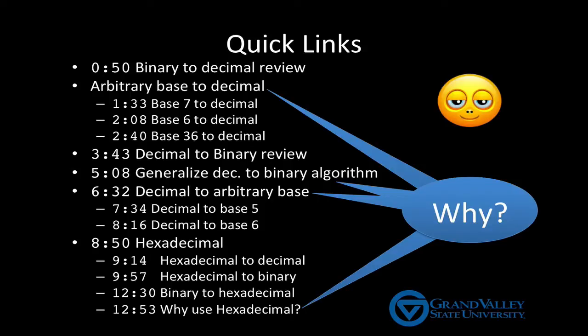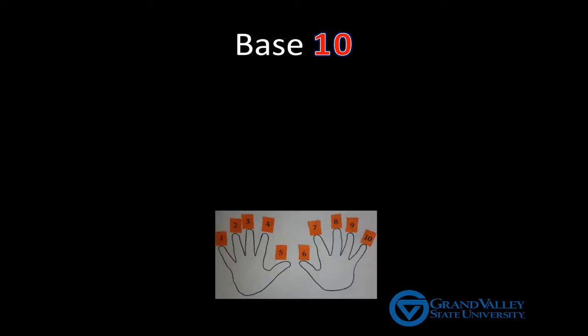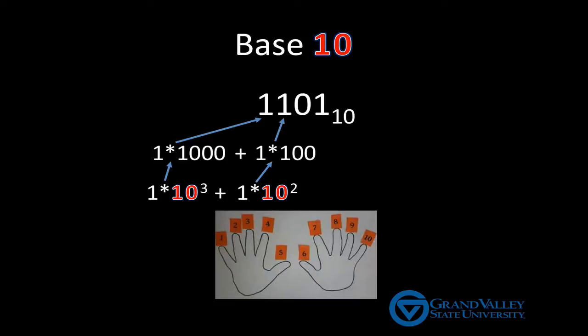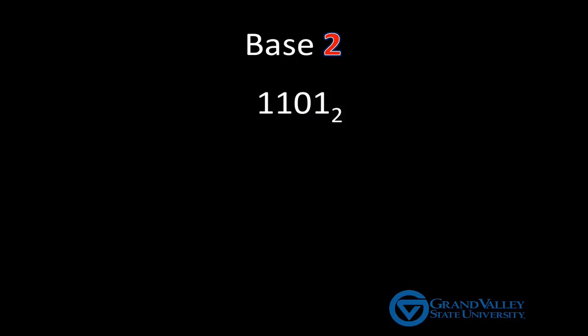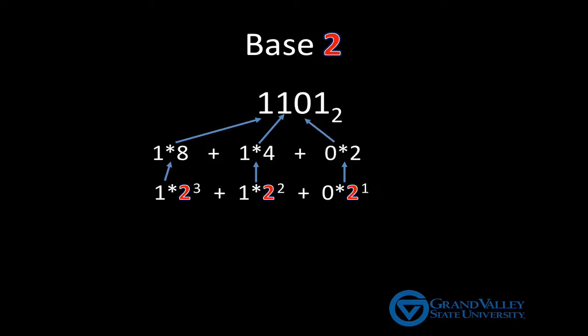In the previous video, we saw that because we have 10 fingers, our normal way of writing numbers is based on each digit representing a power of 10. For example, 1101 means 1000 plus 100 plus no tens plus a single one. We then saw how we can replace the base of 10 with a base of 2.